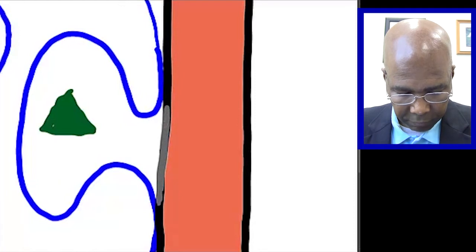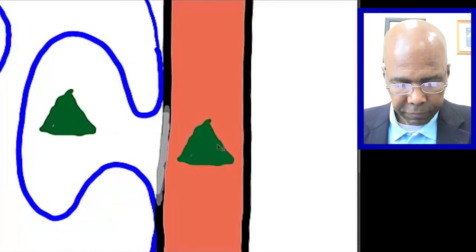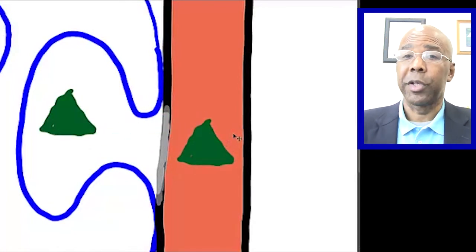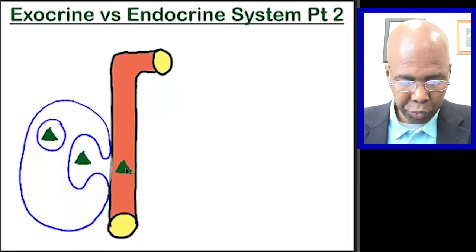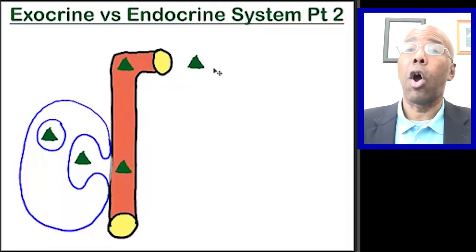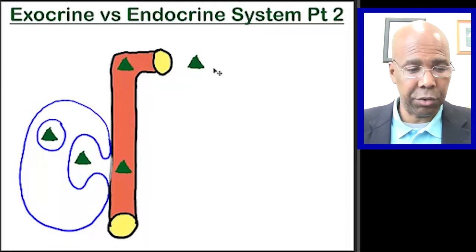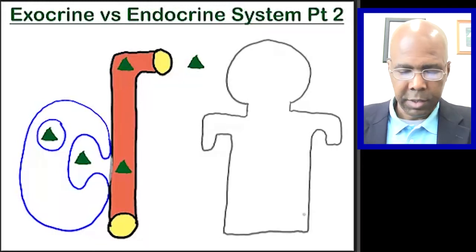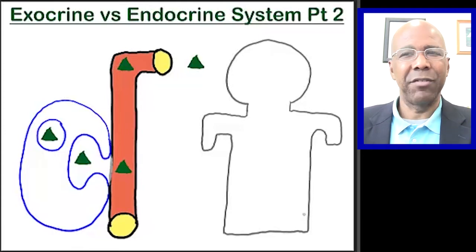So this membrane is very thin. And because it's so thin, the hormone can diffuse directly across the membrane of the capillary. Now the hormone travels through the circulatory system and into all the tissues of the body. We're going to represent the body here. So this is a crude representation of the body. And within the body, you're going to have different types of cells.